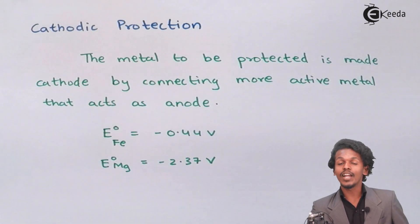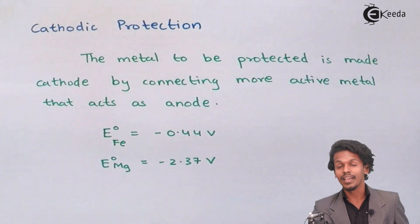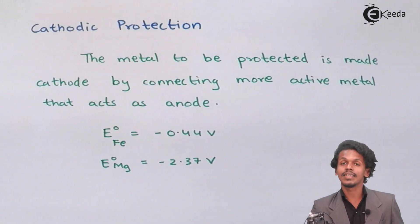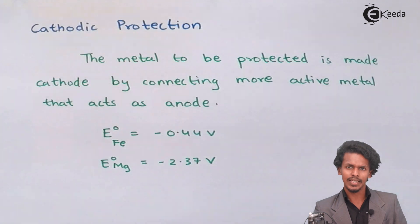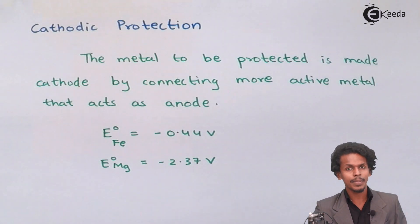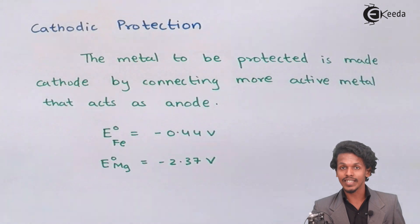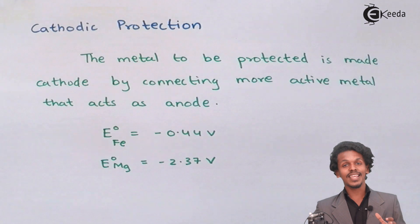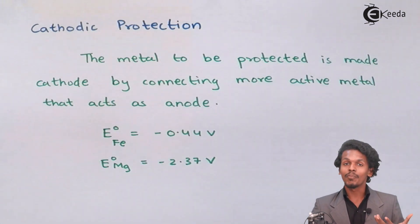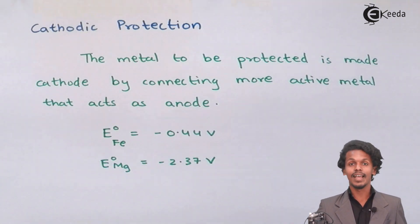the magnesium will try to lose electrons and oxidize first, protecting the iron. Even if the iron gets oxidized to Fe²⁺, the magnesium immediately gets oxidized and the two electrons liberated from magnesium go towards Fe²⁺, converting it back to Fe. In this way, cathodic protection keeps the iron protected.